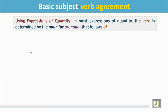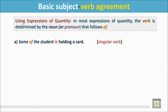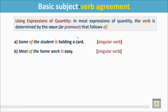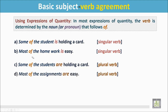Using expressions of quantity. In most expressions of quantity, the verb is determined by the noun or pronoun that follows 'of.' In the example, some of the students are holding a card. The noun 'students' follows 'of,' and because it is a plural noun, the verb is plural: 'are.' Most of the assignments are easy — 'assignments' follows 'of' and is plural, so the verb is 'are.'